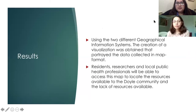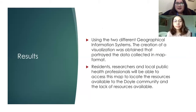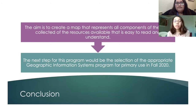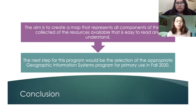So the results — using the two different geographical information systems — allowed the creation of a visualization that portrayed the data collected in map format. Now residents, researchers, and local public health professionals will be able to access this map to locate the resources available to the Doyle community and identify the lack of resources available. Ultimately, the aim was to create a map that represents all components of the data collected and is easy to read and understand. Since we compared these two systems, the next step for this program would be the selection of an appropriate geographical information system for primary use in fall 2020, discussing which one would be more effective in epidemiological research and mapping resources for the Kerrville community.